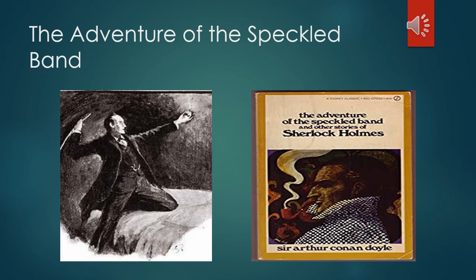Helen's twin sister died almost two years earlier, shortly before she was to be married. Helen had heard her sister's dying words — "the speckled band" — but could not decode their meaning. Helen herself, troubled by the perplexing death of her sister, is now engaged. She has begun to hear strange noises and observe strange activities around Stoke Moran, the impoverished and heavily mortgaged estate where she and her stepfather live.